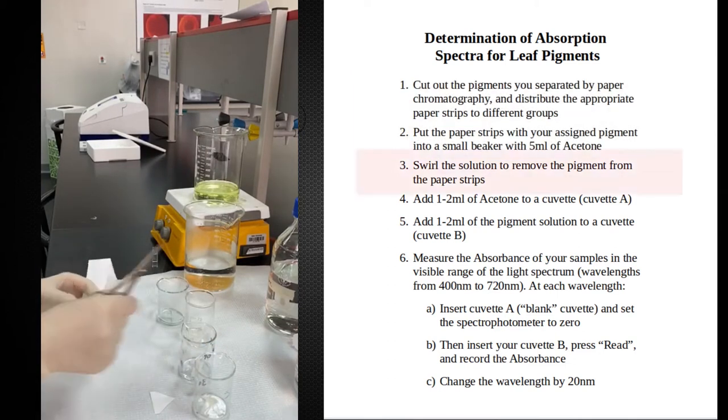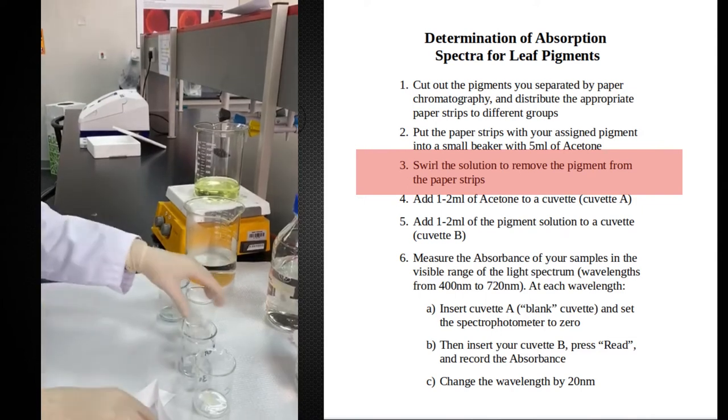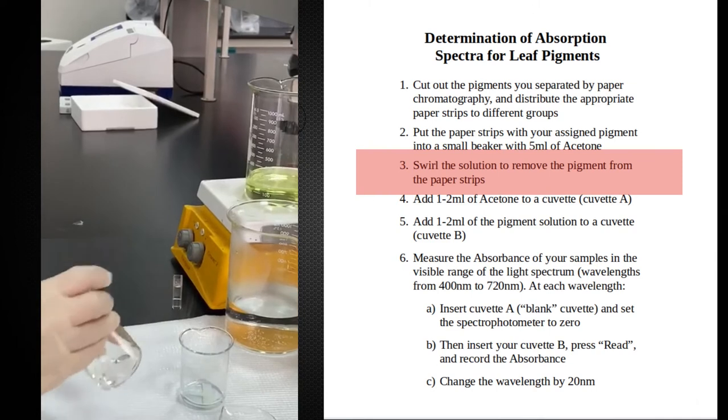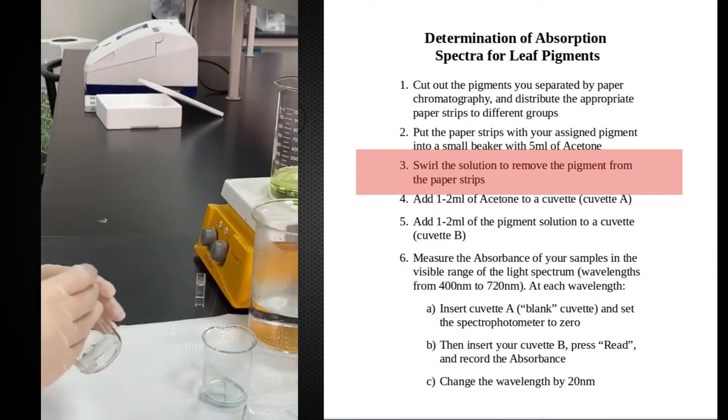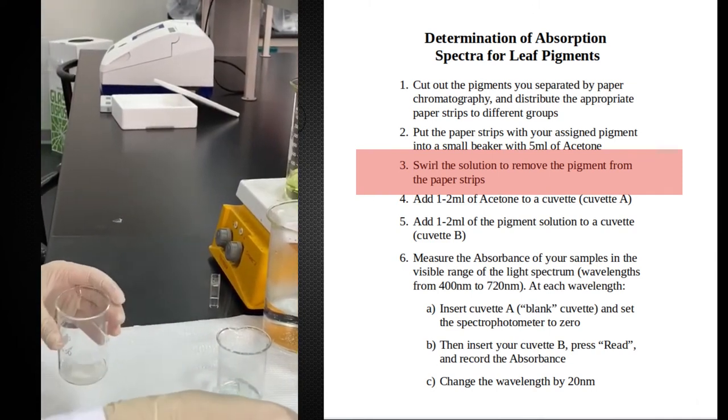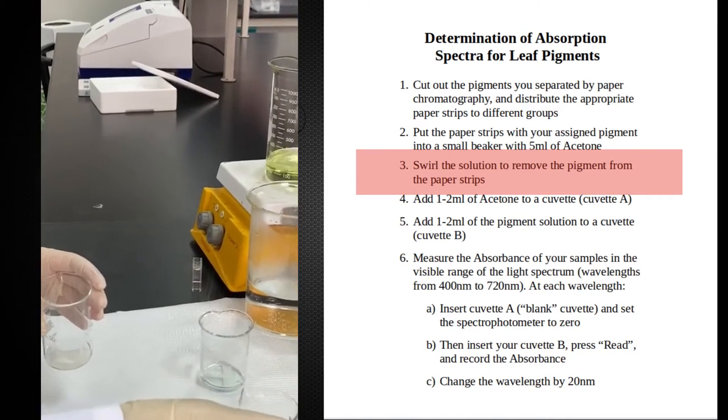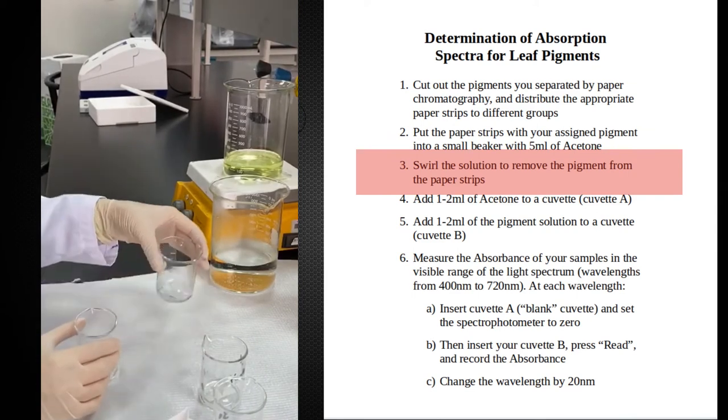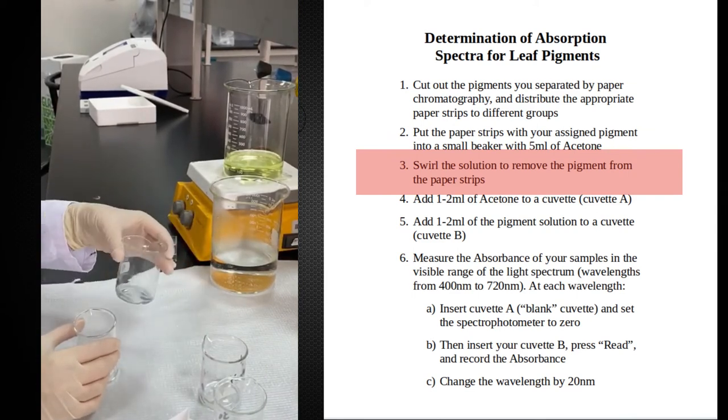I'll show you the example of one of them. So the way we do it is we mix those papers nicely with the acetone until I see that all my papers become totally white. This is the carotene, this is the xanthrophil, this is the chlorophyll A and this is the chlorophyll B.